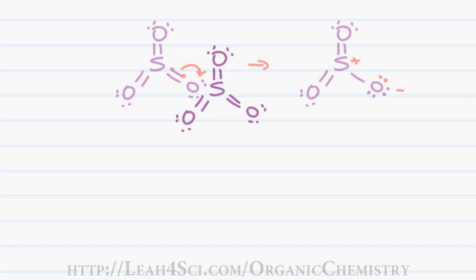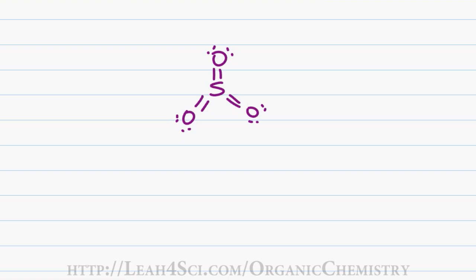And so the actual sulfur trioxide is going to be partially positive on sulfur and partially negative on each of the oxygen atoms due to the potential resonance. This is what makes this molecule such a strong superelectrophile that benzene has no choice but to attack.